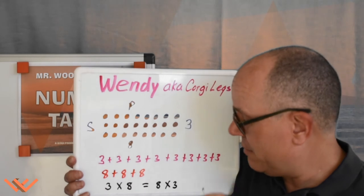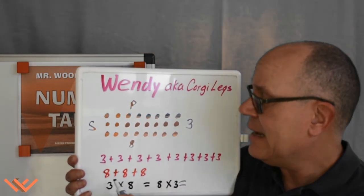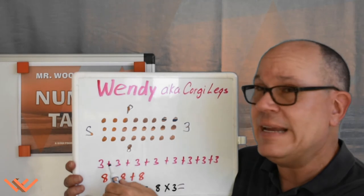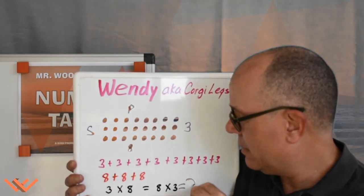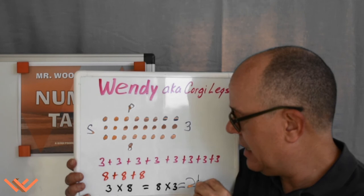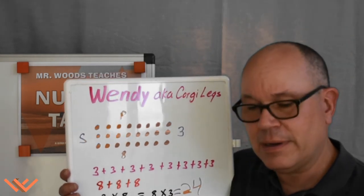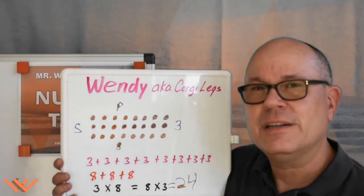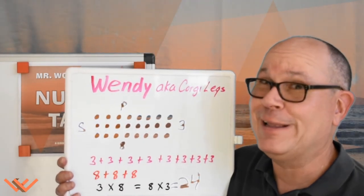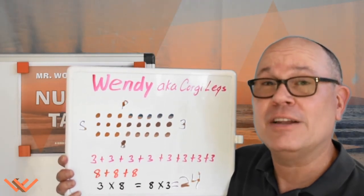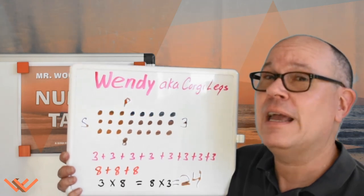You know what the answer is yet? Well, eight times three, three times eight, eight plus eight plus eight, and three added eight times is equal to 24. So Wendy — I should say Corgi Legs — she sang 24 songs over eight performances.